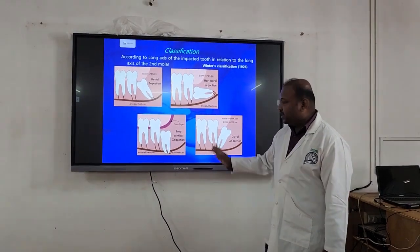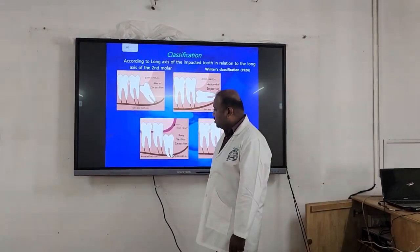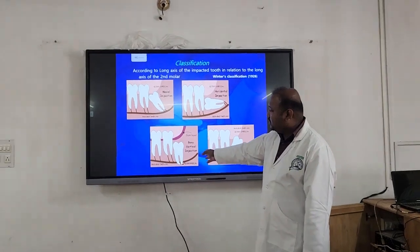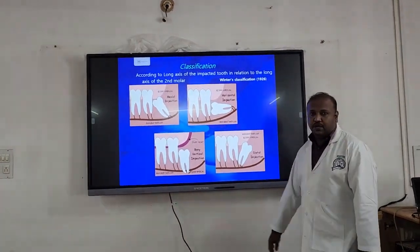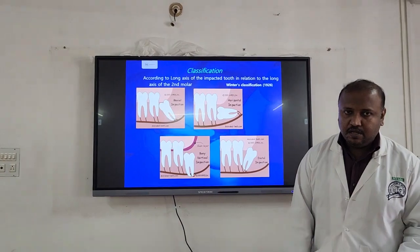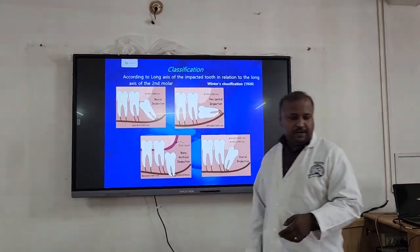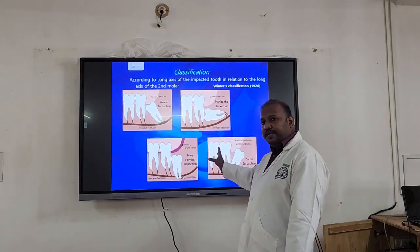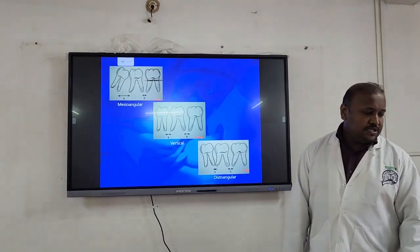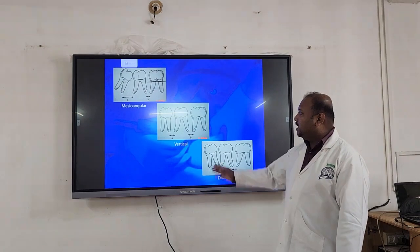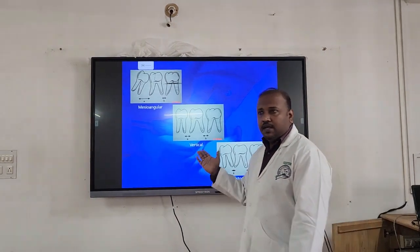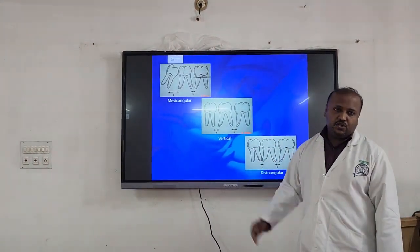When we talk about vertical impaction, it means the long axis of the second molar and the long axis of the third molar are parallel to each other — then we call it a vertical impaction. Then we have a disto-angular impaction. Most of the time there is confusion between vertical impaction and disto-angular impaction. The difficulty in surgical removal mainly depends on the type of impaction, so how do we find the difference? The distance between the roots will tell you whether it is mesio-angular or vertical.